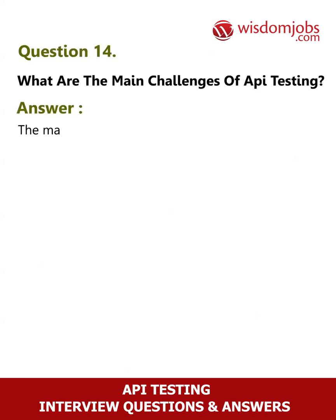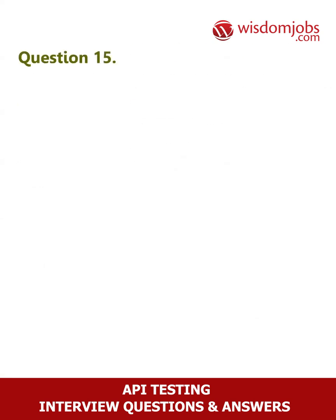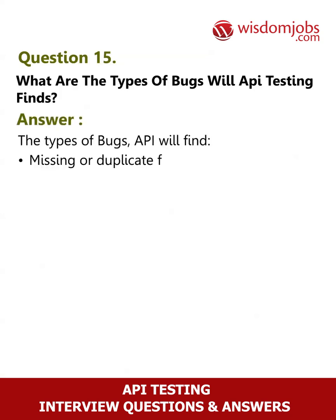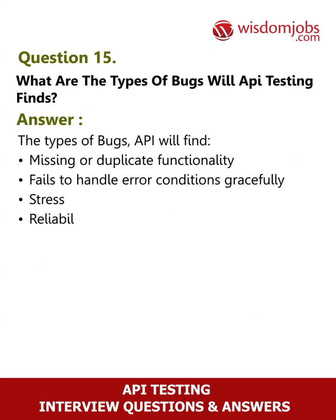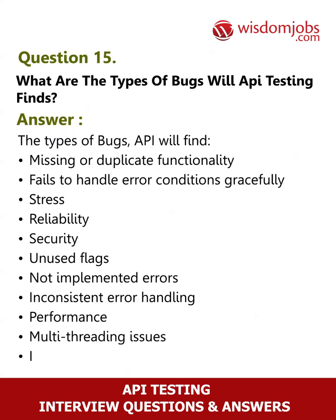Question 14: What are the main challenges of API testing? Answer: The main challenges in API testing are parameter selection, parameter combination, and call sequencing. Question 15: What are the types of bugs that API testing finds? Answer: The types of bugs API testing finds include missing or duplicate functionality, fails to handle error conditions gracefully, stress, reliability, security, unused flags, not implemented errors, inconsistent error handling, performance, multi-threading issues, and improper errors.